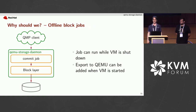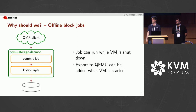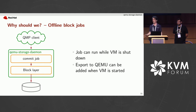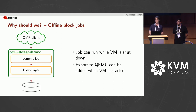Another use case: imagine you start a block job to do a backup while the VM is running, and then you shut down the VM. Traditionally, this means canceling the block job — your backup isn't completed and you have to restart next time. But if you have the storage daemon running in a separate process, you can just shut off the VM and the backup job keeps running. Similarly, if you start a backup while the VM is down, you can later start the VM and attach it to the storage daemon that is already running for the backup job.